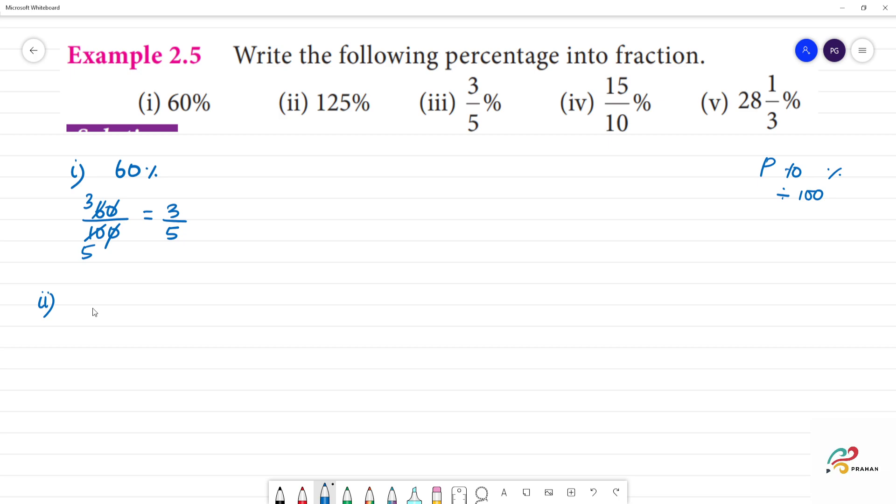Next is second one. 125 percentage, divide by 100. That number, 125 divided by 100. Now, 4 twenty-fives are 100 and 5 twenty-fives are 125. So answer is 5 by 4. Clear?